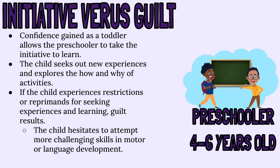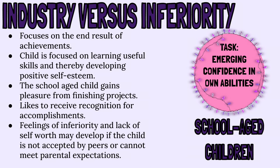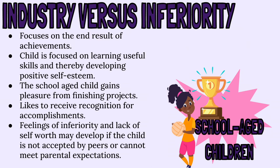Now we are moving into school-age children. This stage is called industry versus inferiority. The virtue for the school-age child is competence. Their task for development is to emerge confidence in their own abilities and to take pleasure in their own accomplishments. The school-age child gains satisfaction from completing projects and receiving recognition for their accomplishments — this explains why children this age really enjoy sports and participating in competitions. School-age children are focused on learning useful skills, which will help them to develop positive self-esteem. If the child isn't accepted by their peers or can't meet their parents' expectations, they'll feel inferior and develop a lack of self-worth.